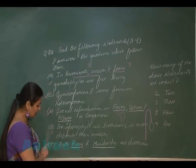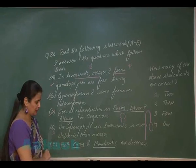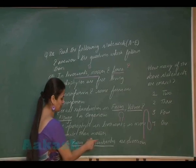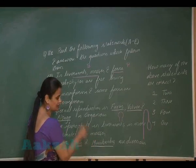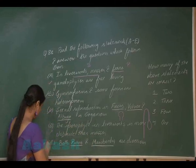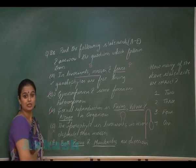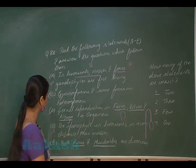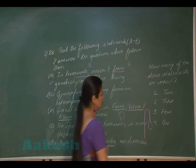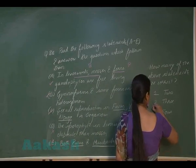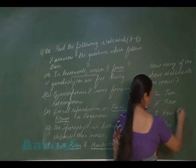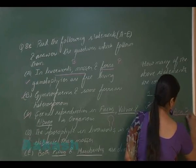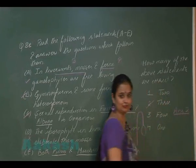Option E: Pinus is monoecious and Marchantia is dioecious — this is also incorrect. Three statements (A, B, C) are correct, so the answer for question 88 is option 2.